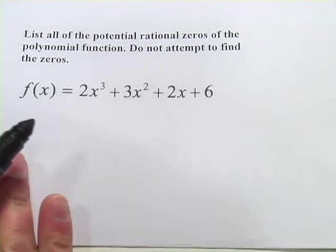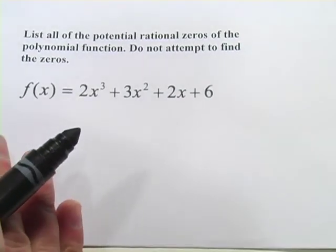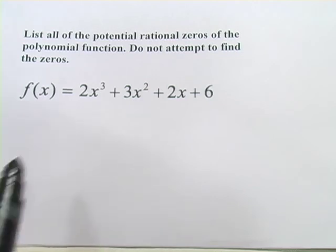Let's look at one more. This one says, list all of the potential rational zeros of the polynomial function and do not attempt to find zeros. Okay, so that's not too hard.